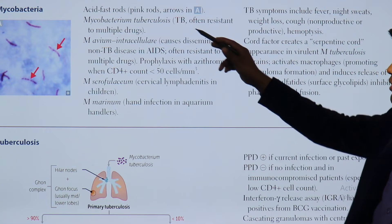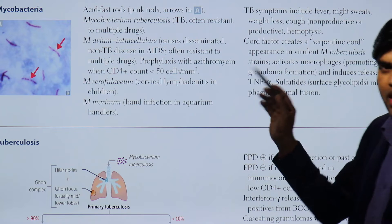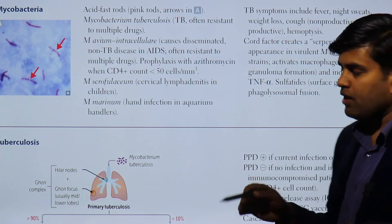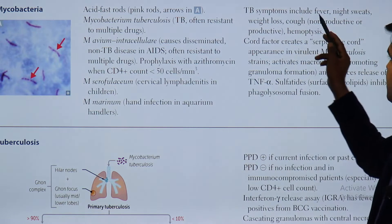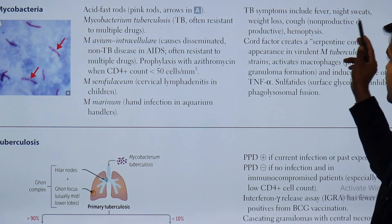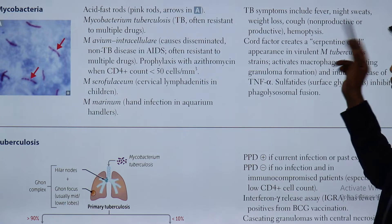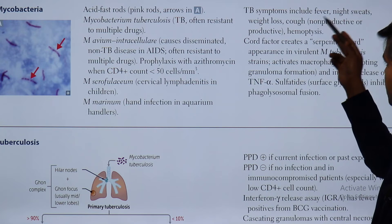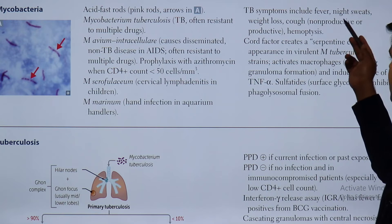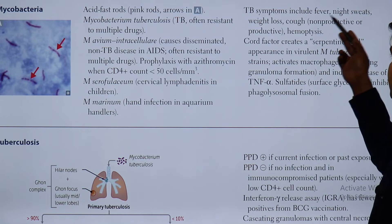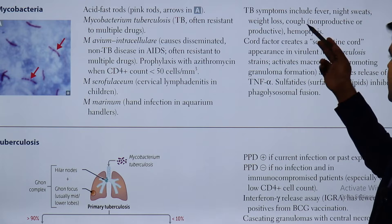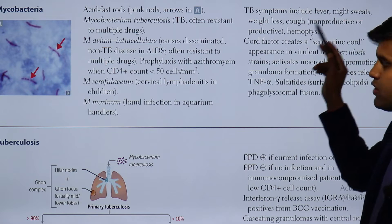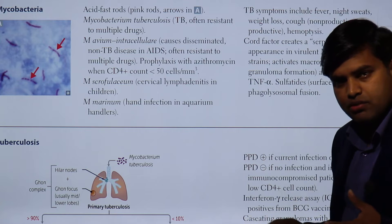Now, tuberculosis — the most highly tested topic — causes symptoms including fever, night sweats, weight loss, cough (non-productive or productive depending on stage), and hemoptysis. There will be a low-grade evening fever, night sweats, and weight loss will be predominant, along with cough and hemoptysis — these are the symptoms presented by a tuberculosis patient.